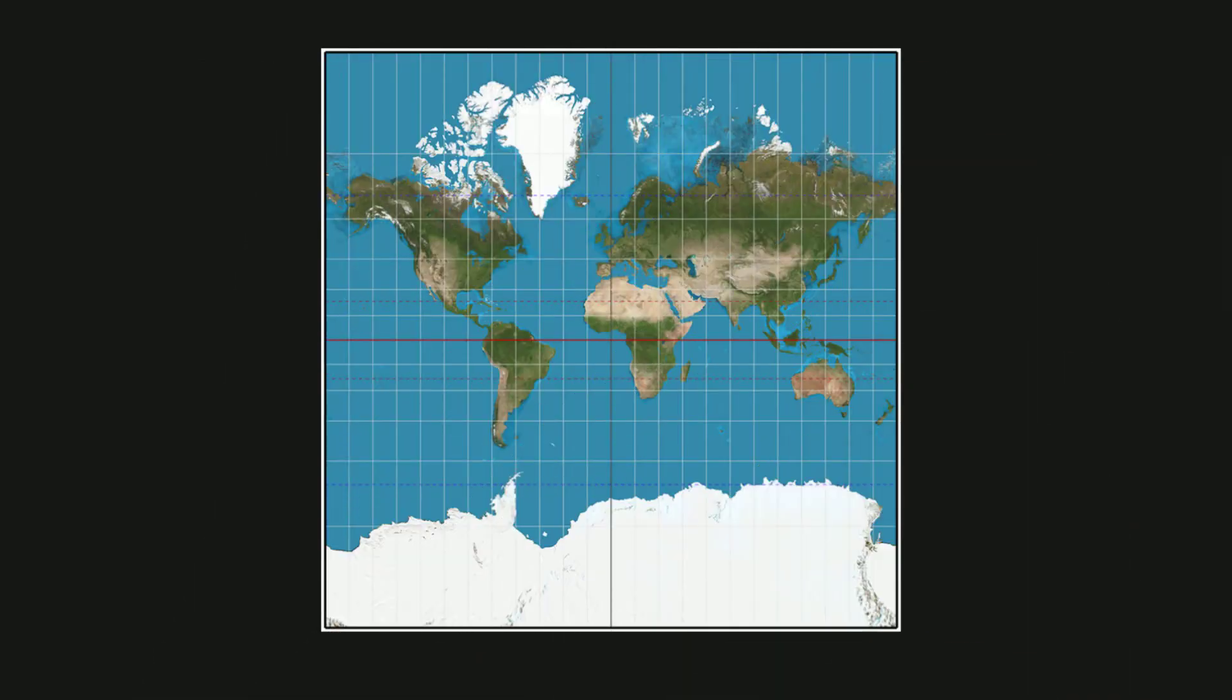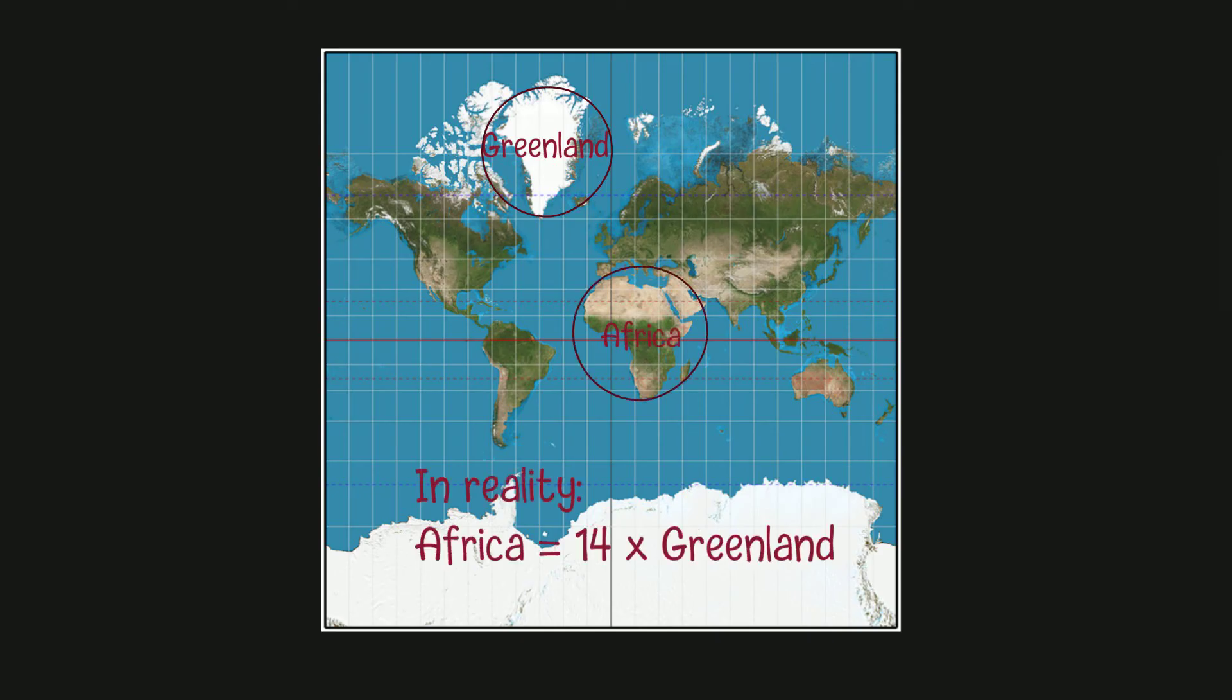For instance, on a Mercator map, Greenland seems to be the same size as Africa, but in reality, Africa is approximately 14 times larger than Greenland. This distortion occurs because Greenland is positioned near the North Pole, while Africa is located around the equator.